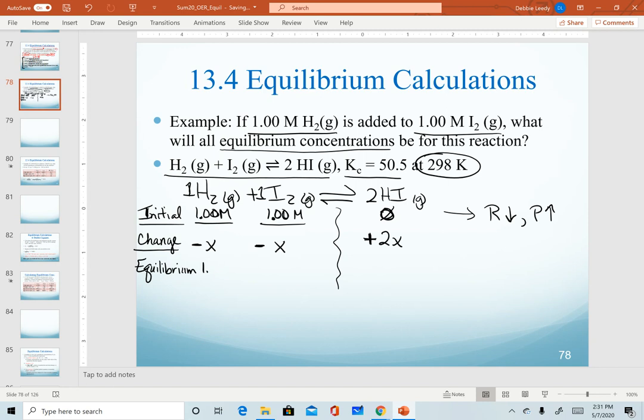So on our change line, we have signs and then we're using our coefficient as our multiple of x. Now the equilibrium line is super easy because we're literally just adding those two together. And although these are called ICE tables, I actually like to call them IC tables. A, because ICs are way more fun. And B, because it's a reminder to go back in once you solve for x, to actually plug your x value back in and get your final quantity for each one of these.